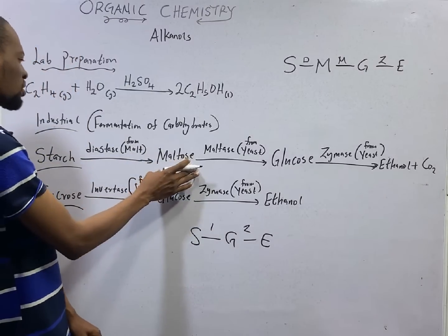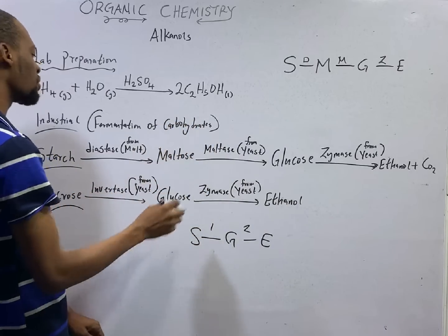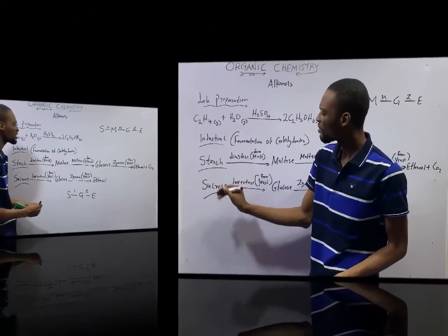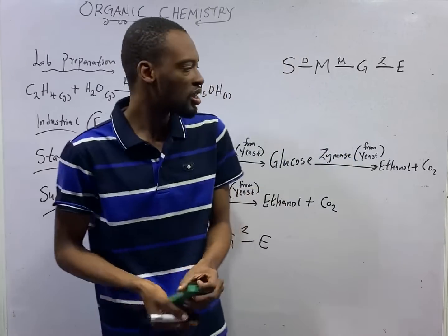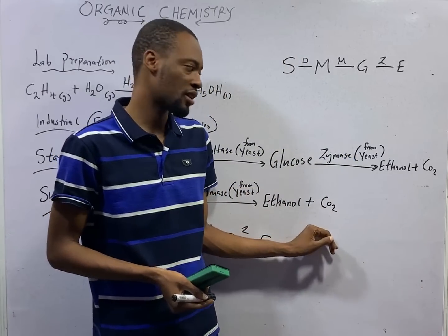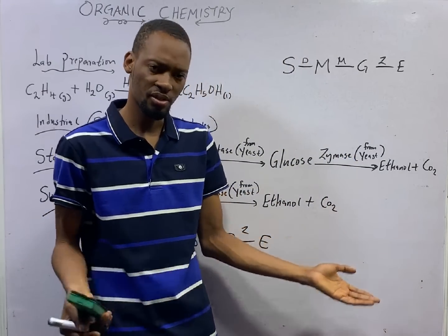In this case, maltose, this step is skipped, production of maltose. Either you are using starch or you are using sucrose, the result is ethanol and carbon dioxide.